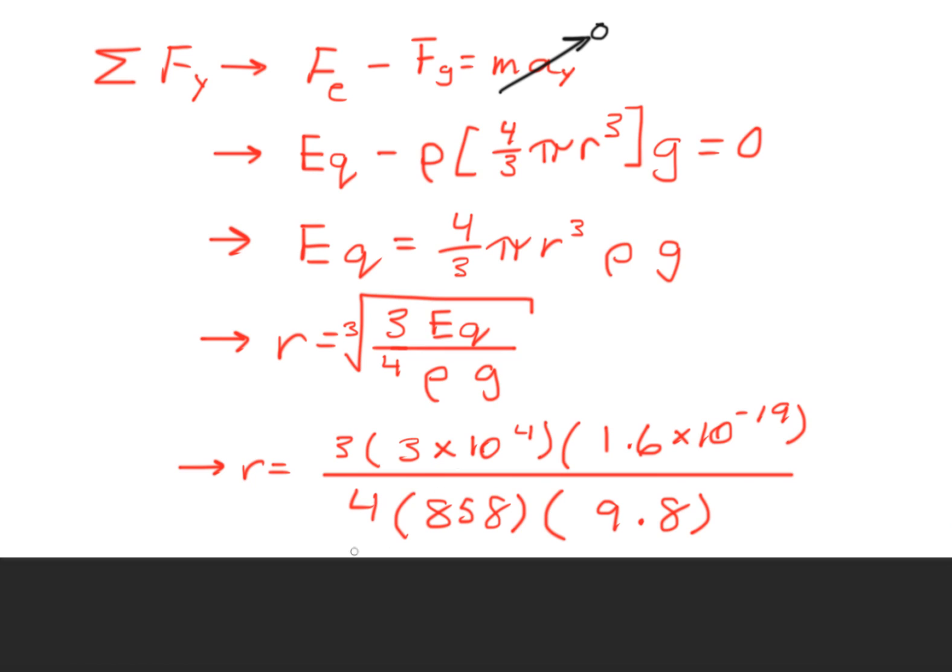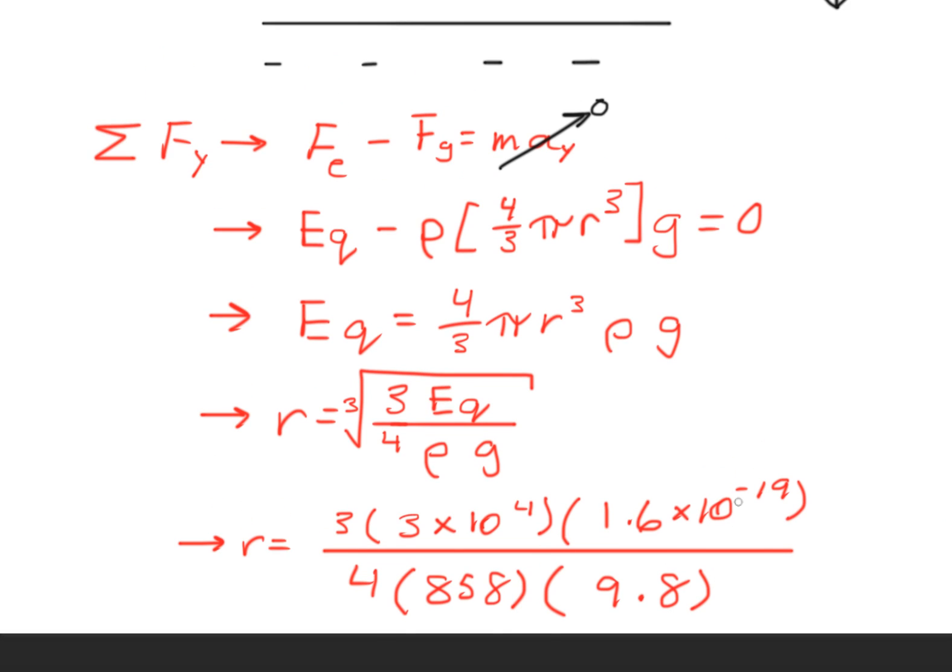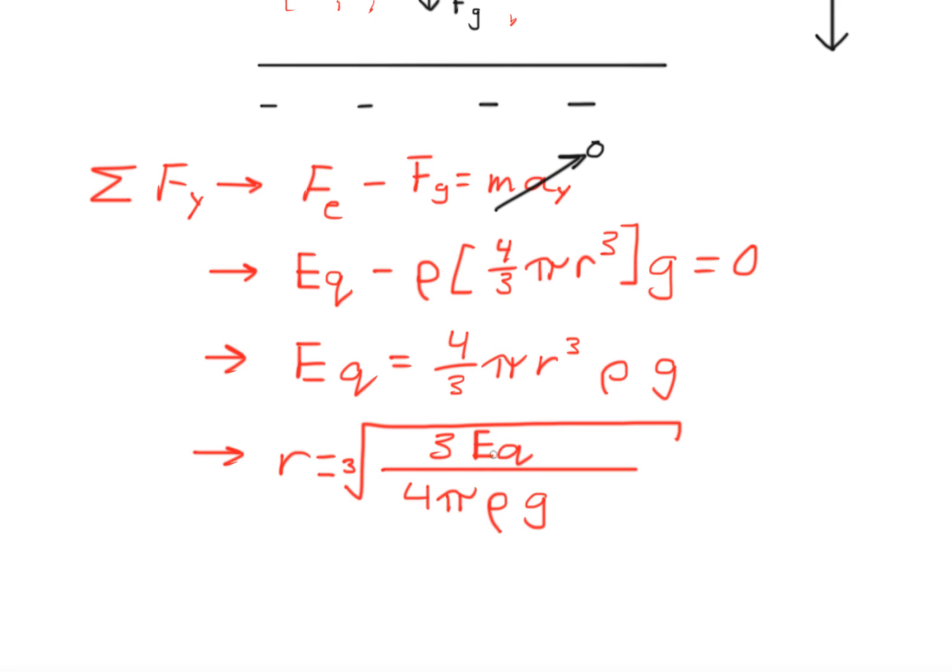We divide it by 4 times the density, which is 858 kg/m³, and we multiply by the acceleration of gravity, which is 9.8 m/s². Solving for r, we get the cube root of 3 times the electric field times the charge divided by 4π times the density times gravity.